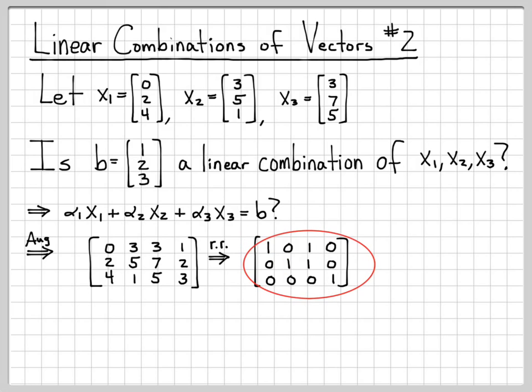So here is the row-reduced echelon form of the augmented matrix. And when I look at this augmented matrix, something interesting happens. This very last row is all 0s except for a single 1 on the fourth column. So what this equation is saying, this final row, is that 0 equals 1.